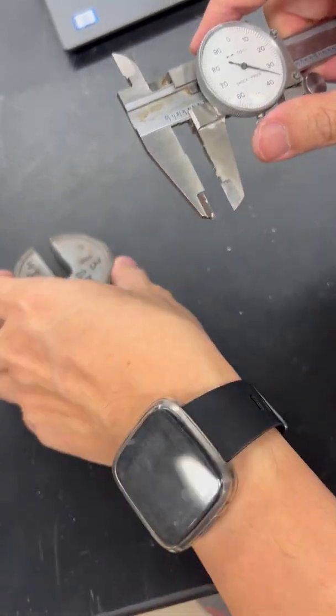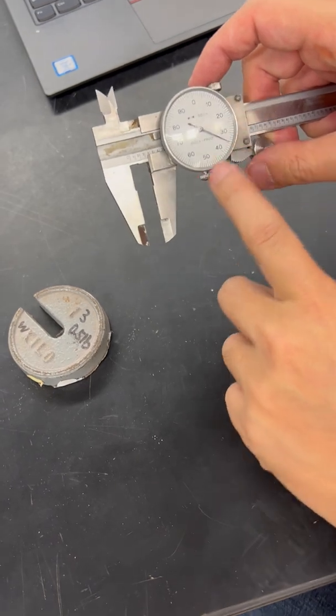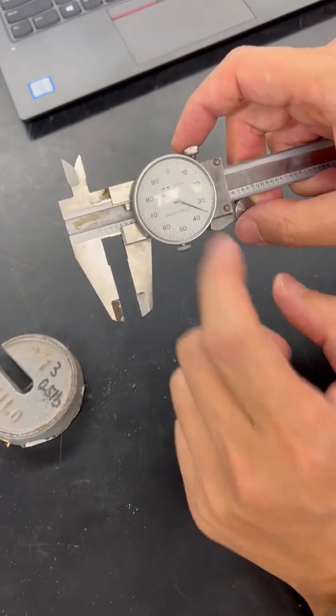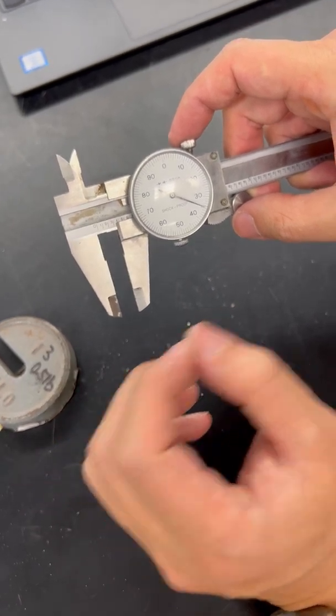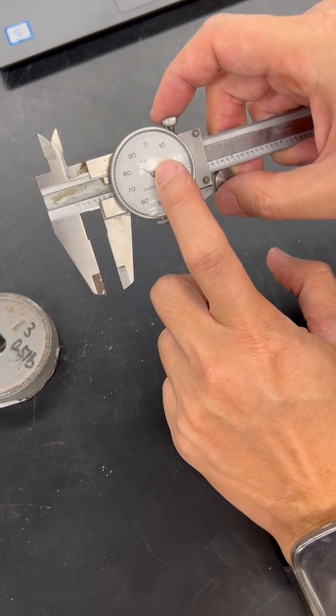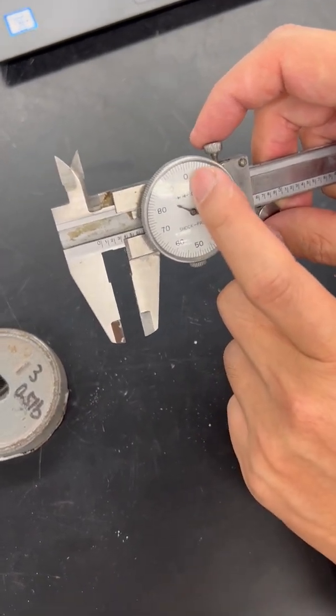To read the caliper, we also need to realize there's a dial here which helps us to go into more precise measurements. The precision goes down to 0.001 inch, which means each tick mark there is 0.01 inch.